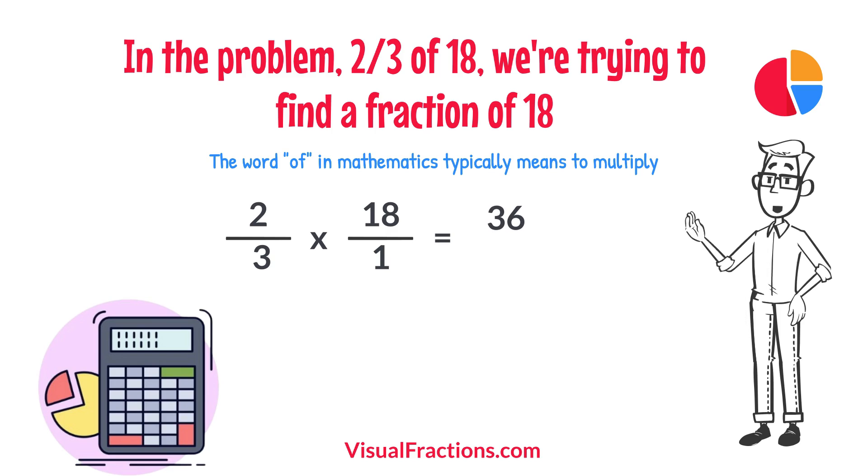Next, multiply the denominators, 1 times 3 equals 3. We now have a new fraction, 36-thirds.